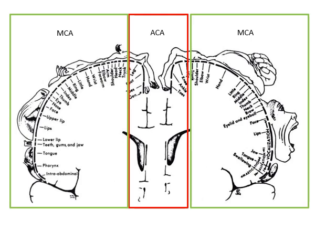Remember the homunculus: the medial aspect of the brain is supplied by the anterior cerebral artery, so if it is blocked, the lower limb will be affected. The middle cerebral artery supplies the upper limb, face, and neck structures like the larynx and pharynx. If you have this picture in your mind, you should be able to deal with all the clinical anatomy questions.